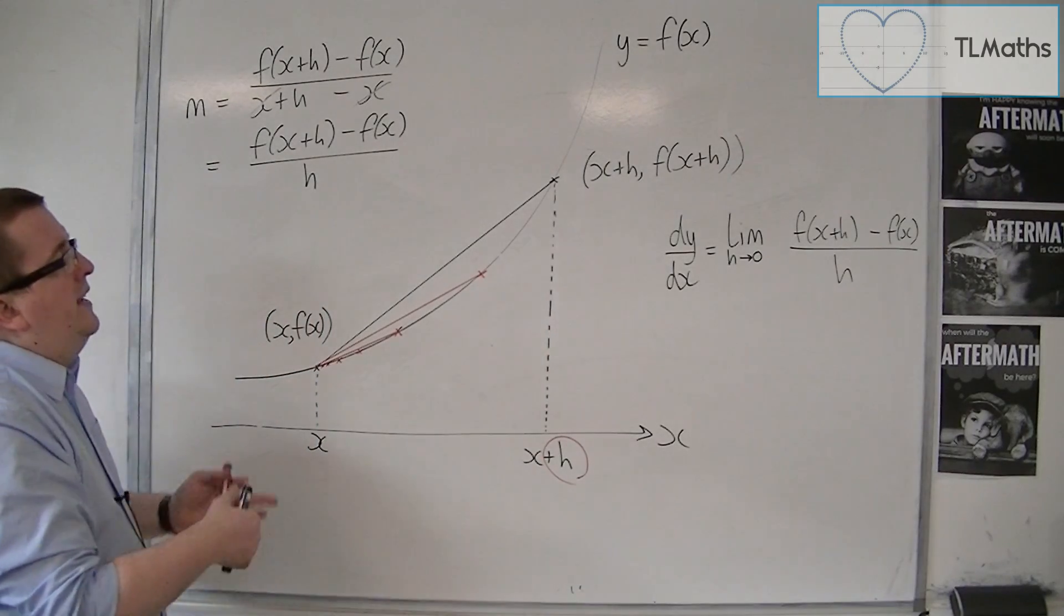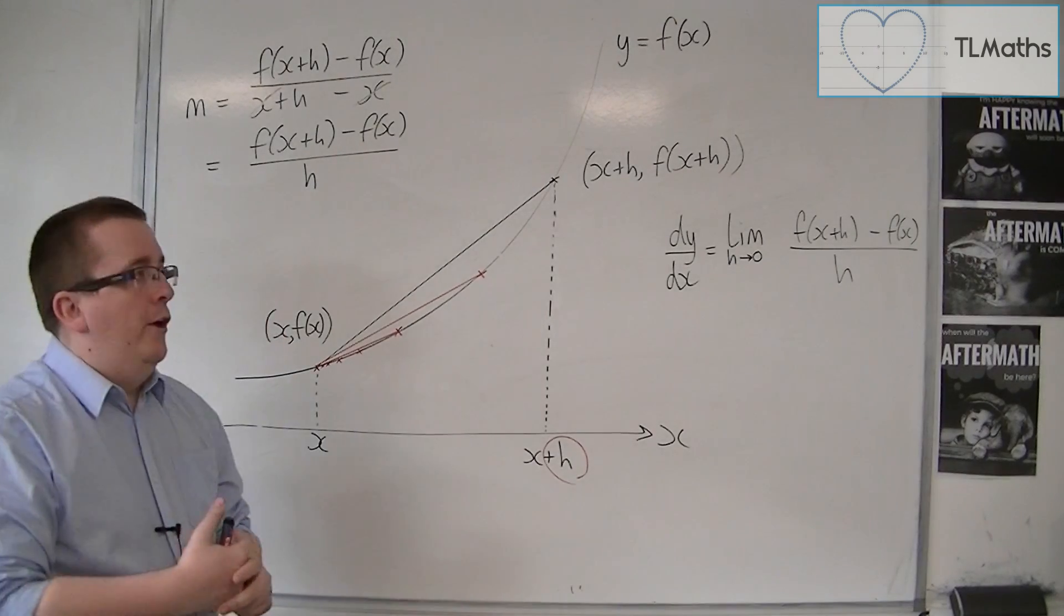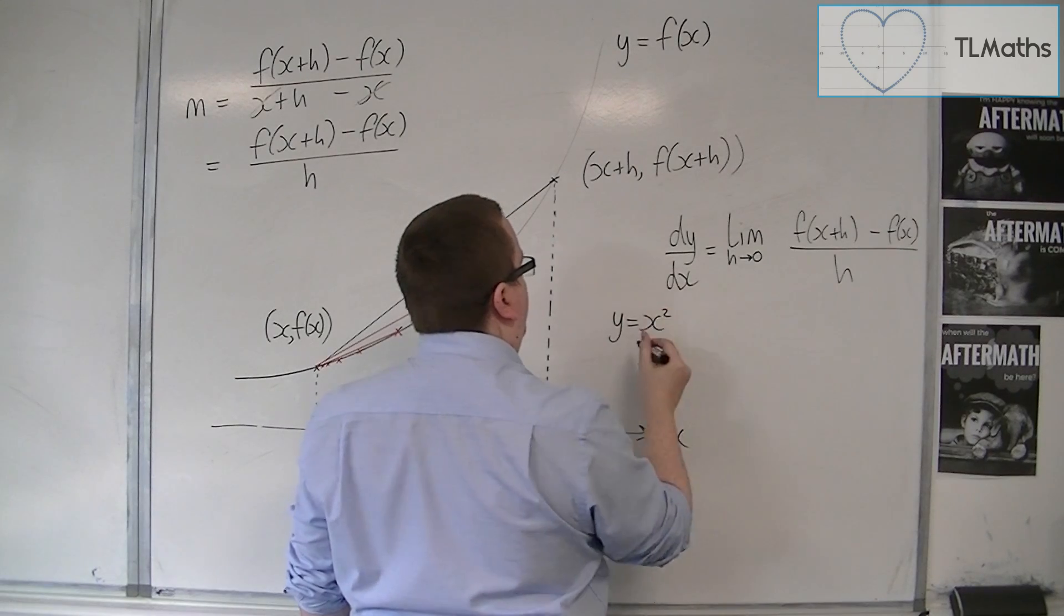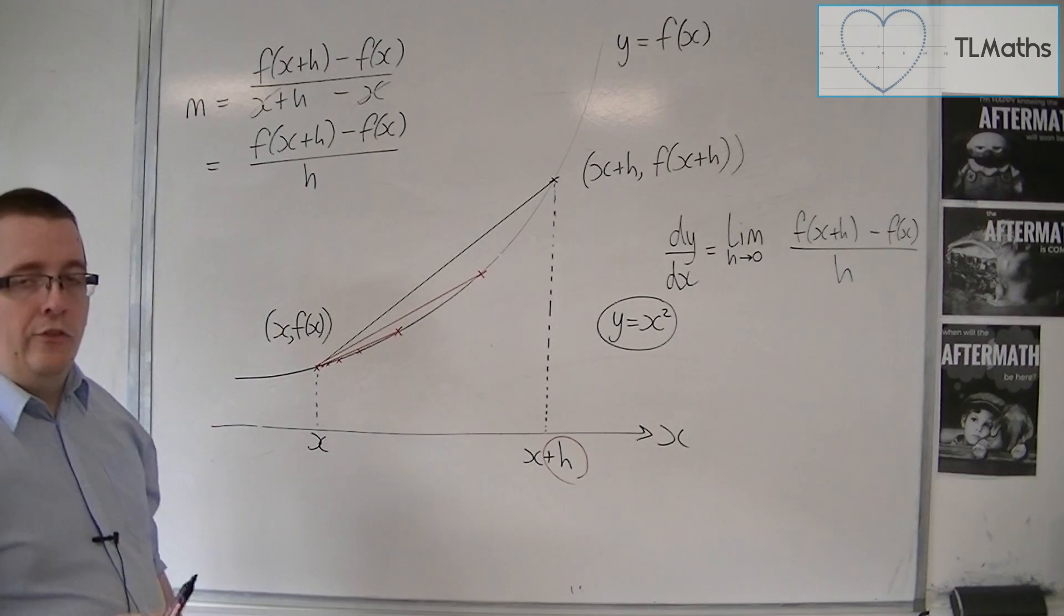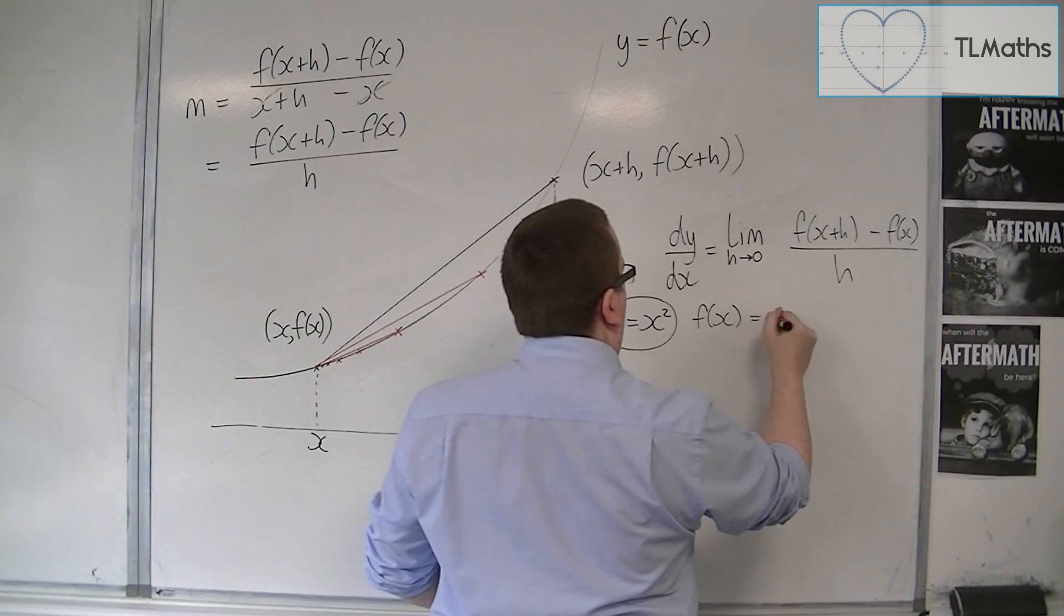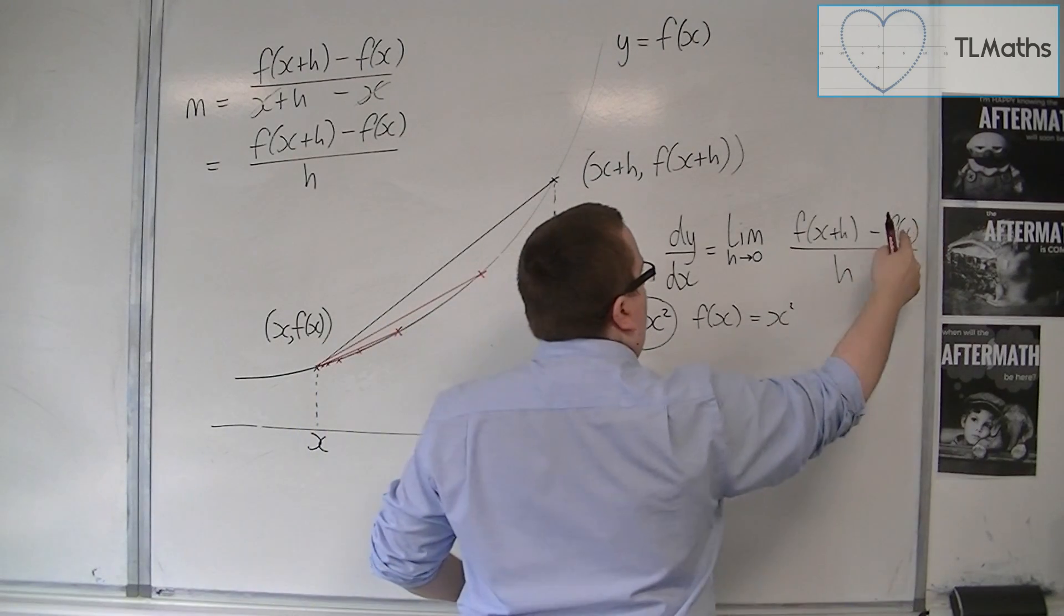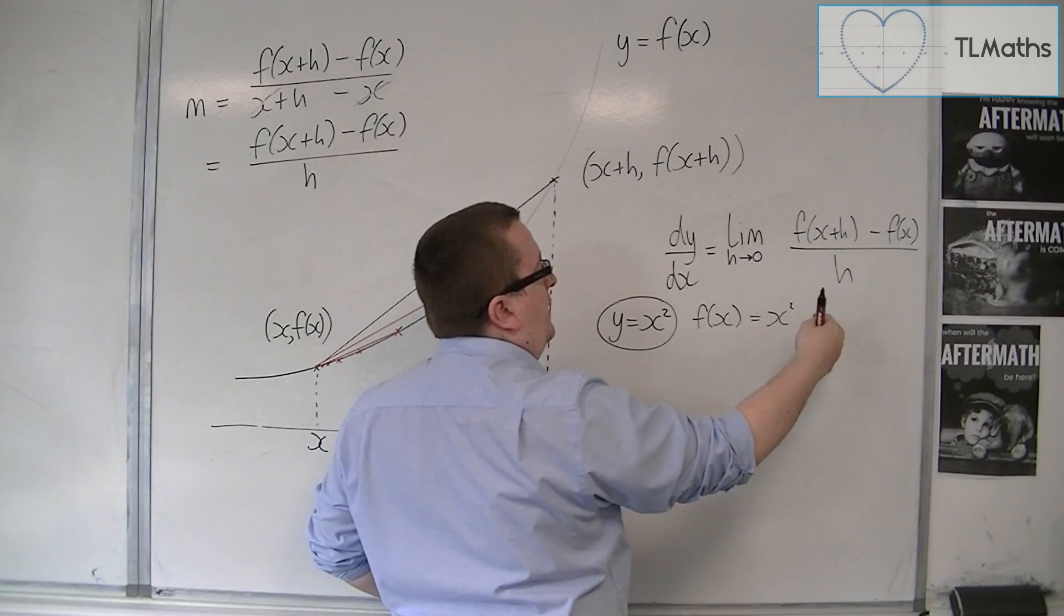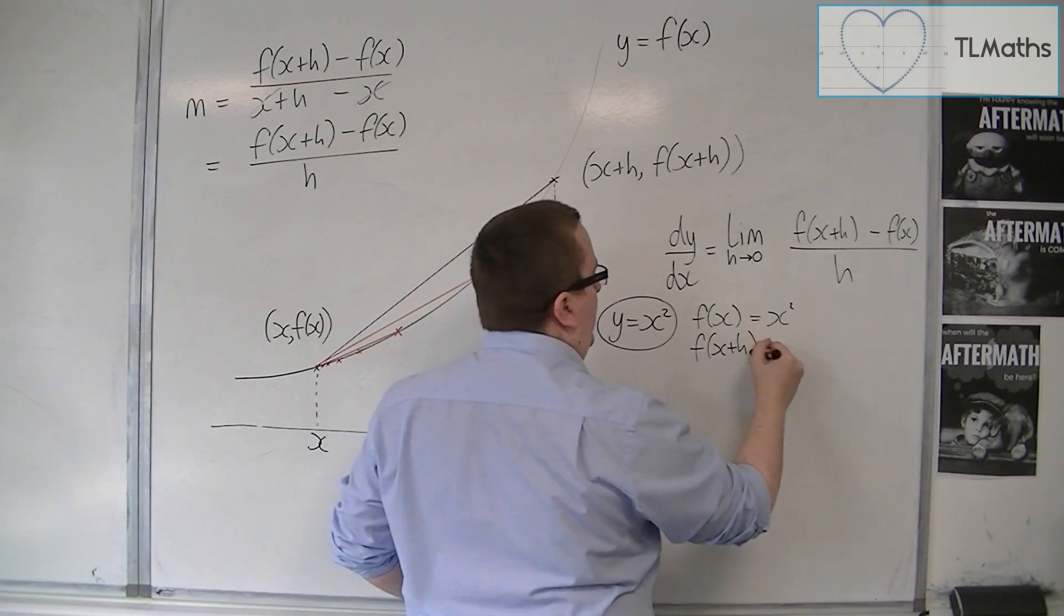So, let me show you an example. So let's say we started off with the curve y equals x squared. Let's say that f of x is equal to x squared. Then, I know what f of x is. h can stay as it is, because that's just a number that is getting smaller. And f of x plus h is something that I need to find.